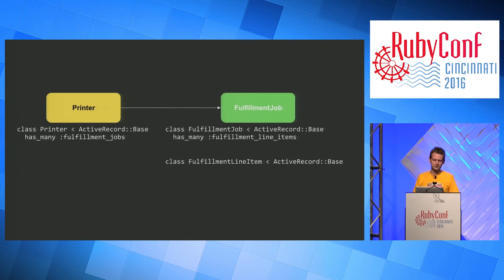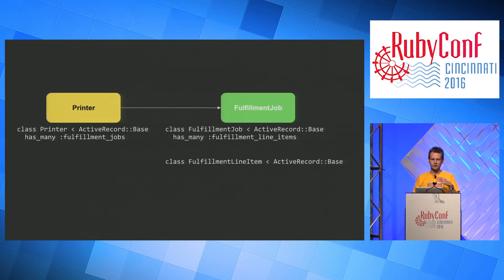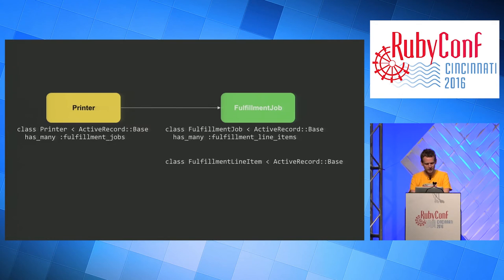When a job gets assigned, it actually creates the fulfillment job — an Active Record object with a state machine attached to it, and a collection of fulfillment line items. The analogy in common e-commerce domain modeling is like an order and a line item: a fulfillment job and a fulfillment line item. Each fulfillment line item corresponds to a particular product you're printing and shipping. The fulfillment job exists throughout the entire lifecycle of the fulfillment process.